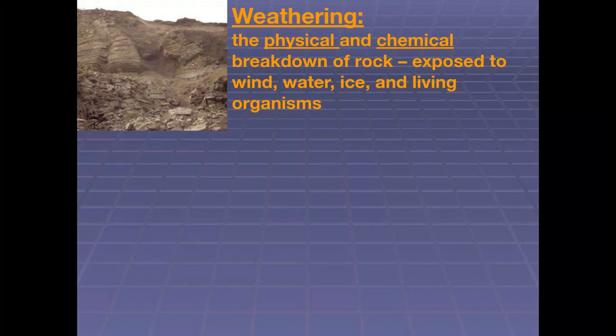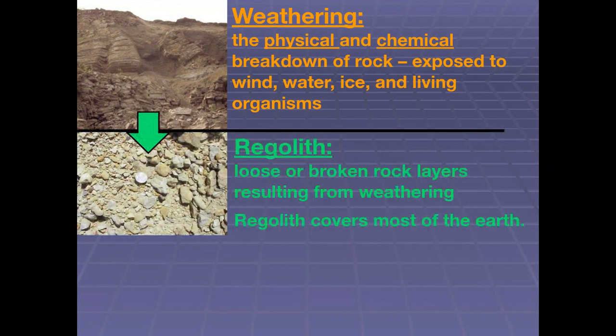This boulder would be exposed to wind, water, ice, and living organisms — these types of processes, 24/7, never quits. Once material is broken down into smaller pieces through weathering processes, it produces another type of product we term regolith. Regolith represents loose or broken-down rock layers, similar to what we talked about as unconsolidated sediment. Weathering takes place 24/7, so it's very reasonable that regolith covers most of the earth's surface.